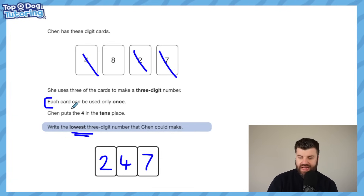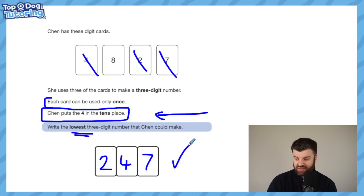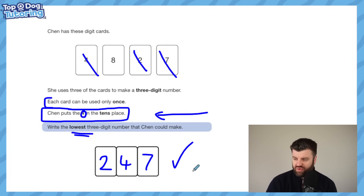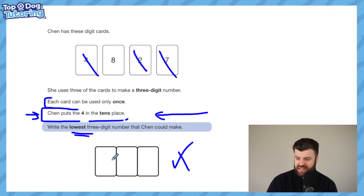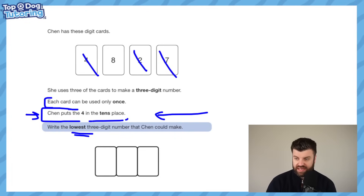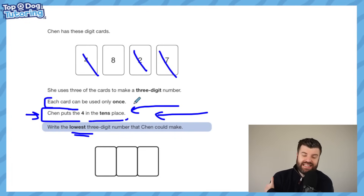Now look where we could have made a fatal error. The question also says 'Chen puts the 4 in the tens place' - luckily we could have ignored that extra bit of information and still got the question right. But imagine if it said 'Chen puts an 8 in the tens place' - that would make our answer wrong. If it had said that, then 8 goes in the tens place first, and then the lowest remaining digits are 2 and 4. Luckily the test writers were kind, but that isn't always what happens.